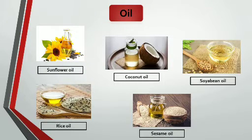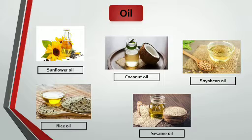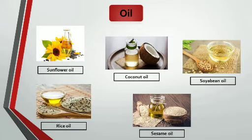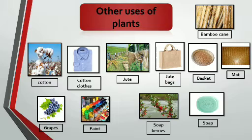We get oil from seeds like sunflower, coconut, soybean, rice, and sesame. They give us oil which is used for cooking and other purposes. Let's see some other uses of plants.